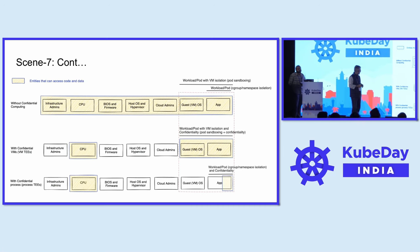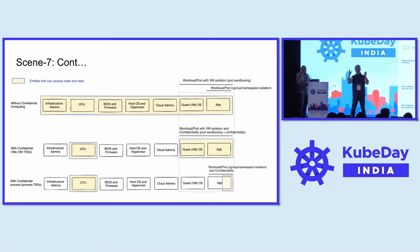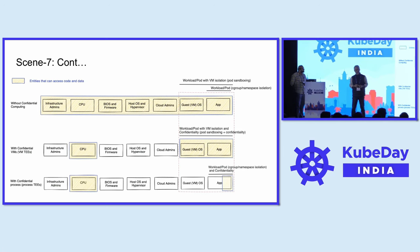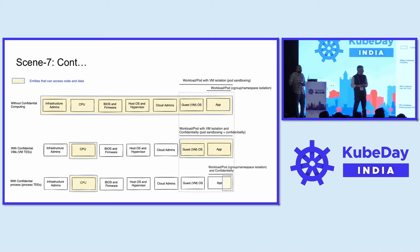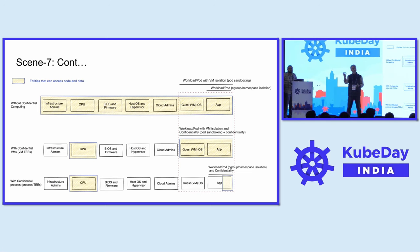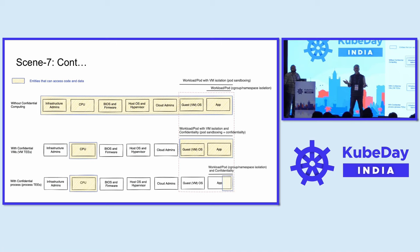The process TEE requires one to change and re-architect the application to a large extent, or add extra components. When you go with VM-based TEEs, it's very easy — you take your existing container and deploy it inside a VM TEE, that's it. You don't need to make any changes. You need to have a VM TEE on the infrastructure side, but from your workload and application standpoint, no changes are required.